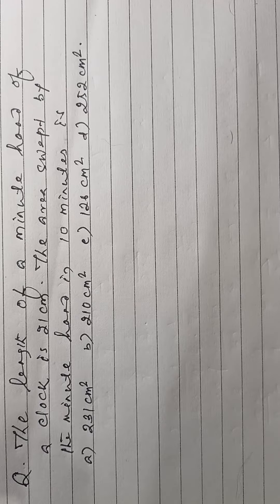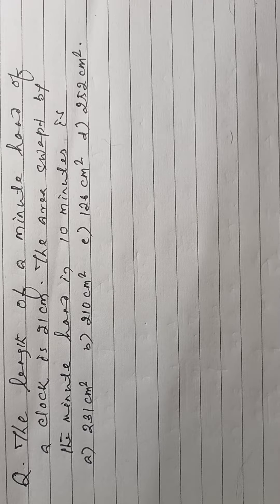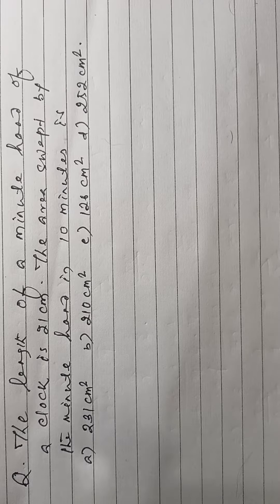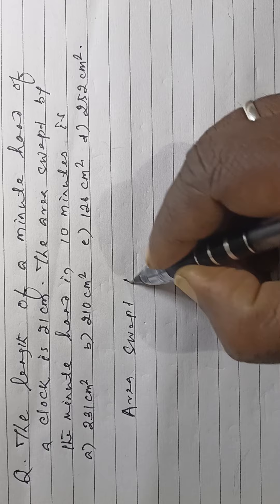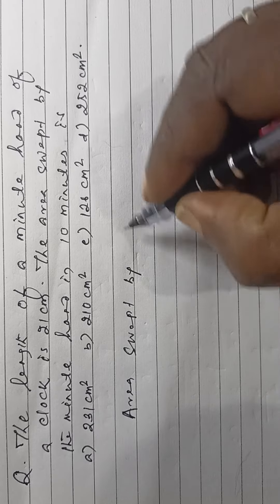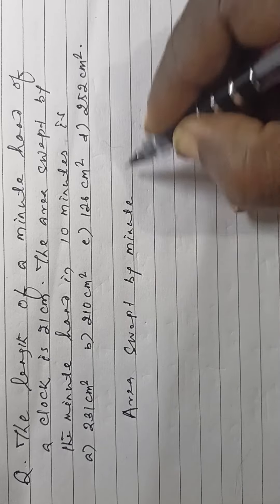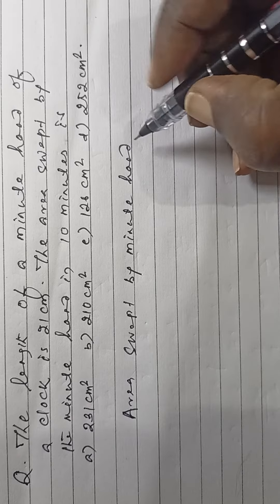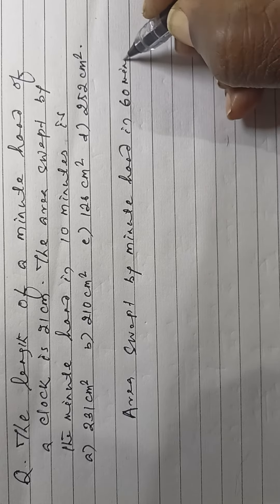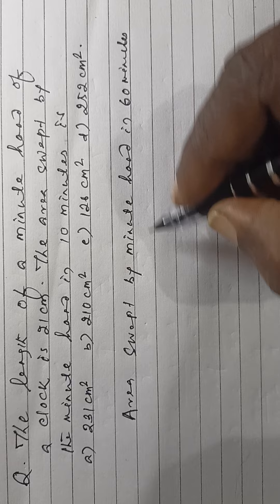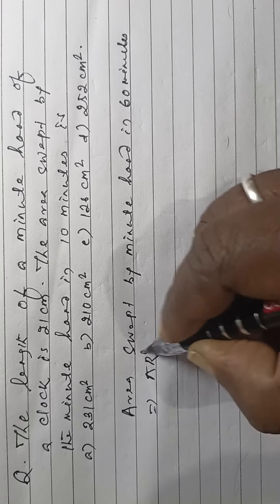The length of a minute hand of a clock is 21 centimeters. The area swept by the minute hand in 10 minutes is: the area swept by the minute hand in 60 minutes is equal to πr².